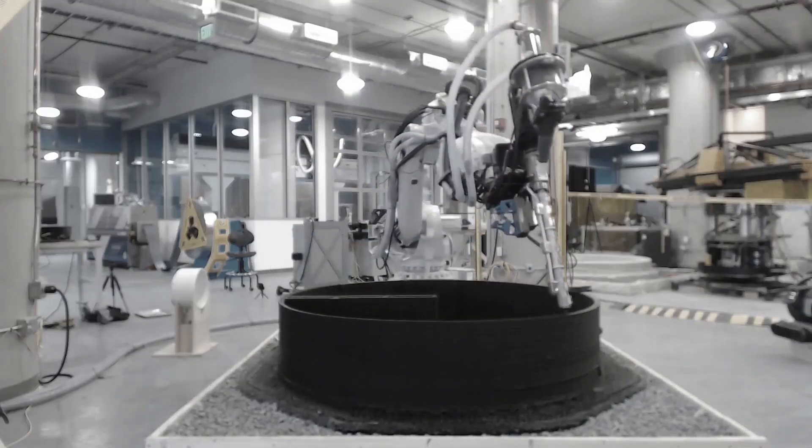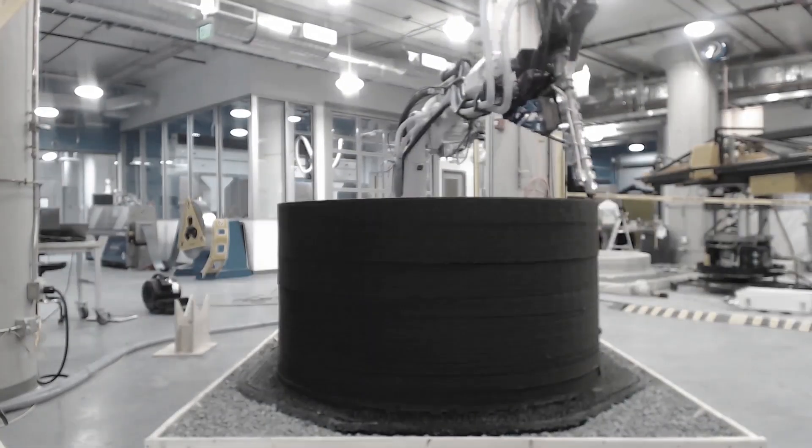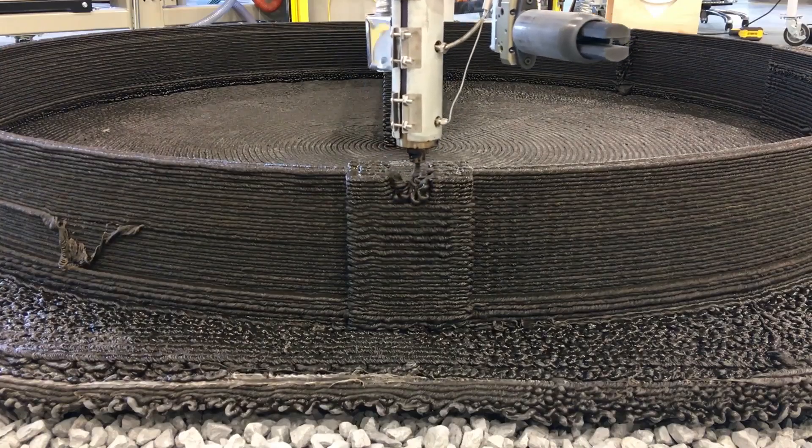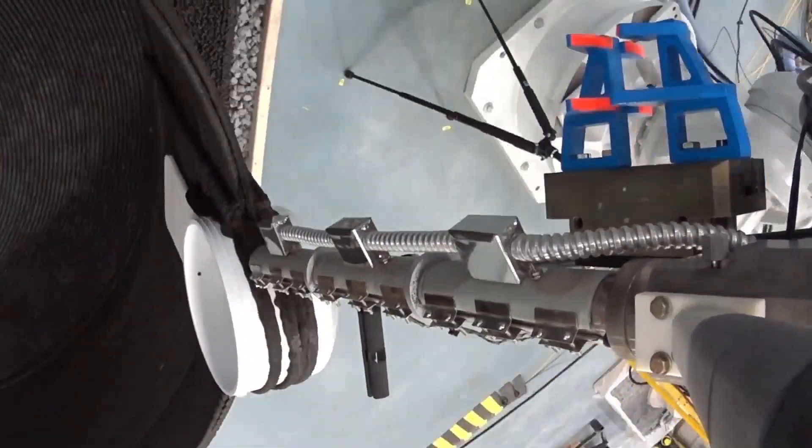Four weeks later, we successfully printed in 24 hours a large cylinder designed to hold 1,200 gallons of water, complete with prefabricated wall penetrations, robotically placed and sealed on the fly.